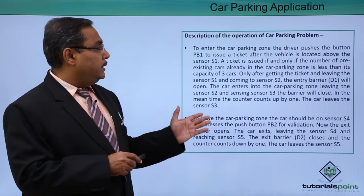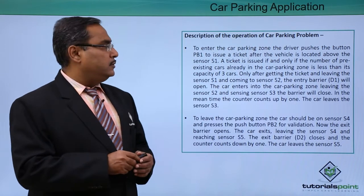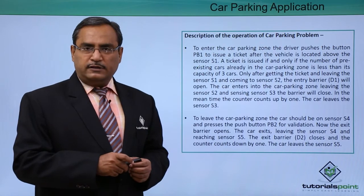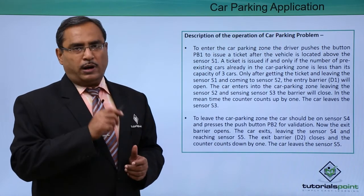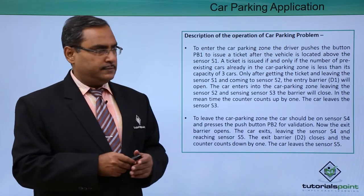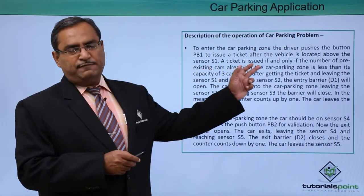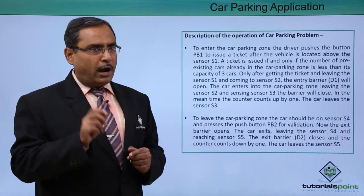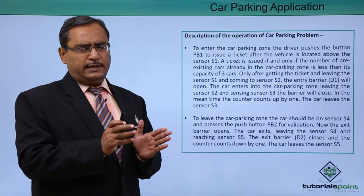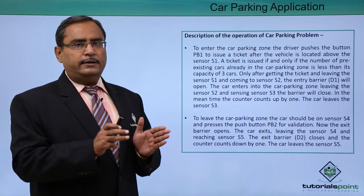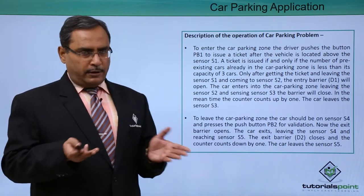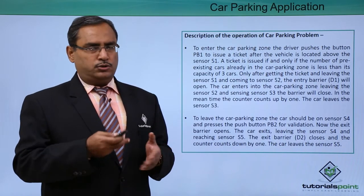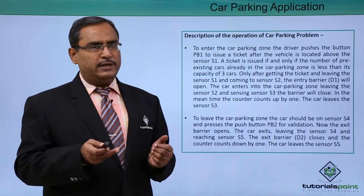To enter the car parking zone, the driver pushes push button PB1 to issue a ticket after the vehicle is on sensor S1. The sensor is a load sensor. The ticket will be issued if and only if the car parking zone has space to park. For simplicity, we have taken that this zone can park a maximum of three cars at a time, though in real life it could be 300. We can increase the counter value accordingly.